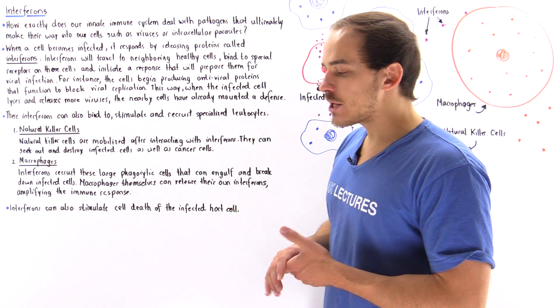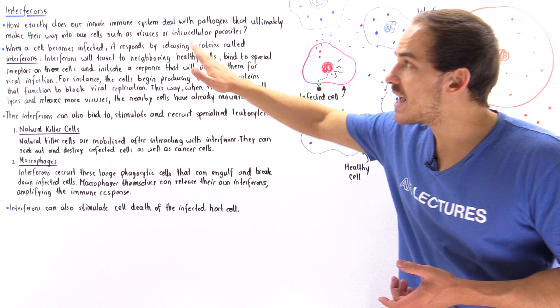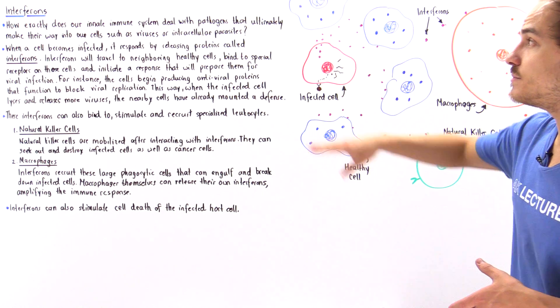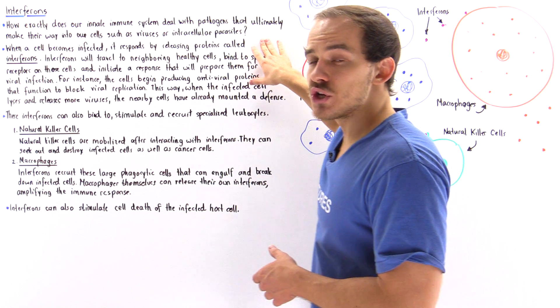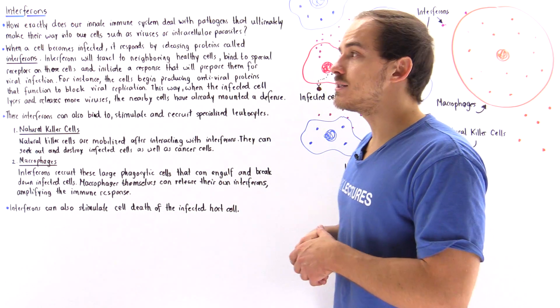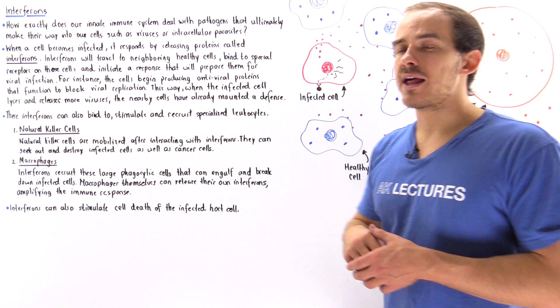So the question that we're going to briefly address in this lecture is how exactly does our innate, non-specific immune system deal with pathogens that ultimately end up making their way into the cells of our body such as viruses and other intracellular parasites.